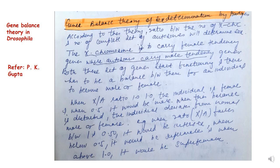Now in this lecture we will focus on the mechanism of sex determination in Drosophila — specifically the gene balance theory of sex determination, which was given by Bridges. According to this theory, the ratio between the number of X chromosomes and the number of complete sets of autosomes will determine sex in Drosophila. X chromosomes carry female-tendency genes while autosomes carry male-tendency genes.